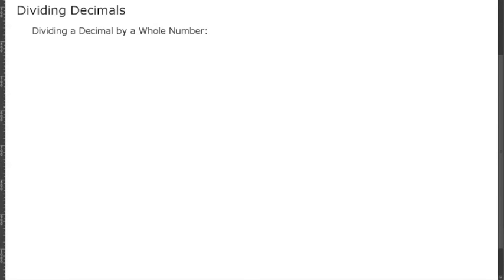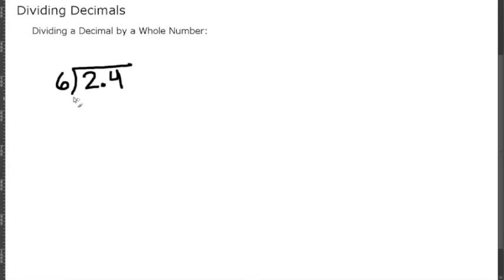In this video I'm going to teach you all about dividing decimals. Let's look at when you divide a decimal by a whole number. Let me give you the example of 2.4 divided by 6. The decimal place is already in line for us, so we just bring the decimal place straight up.